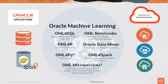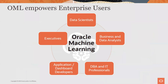OML Microservices is new to the mix — made available for internal Oracle applications supporting cognitive image, text, scoring, and deployment. Because of its success internally, we're going to make it generally available. The Oracle Machine Learning tools straddle both the on-premise side and the cloud side.